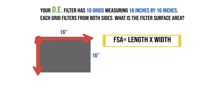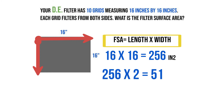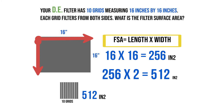Filter surface area is going to be length times width, so it's going to be 16 times 16, which gives us 256 square inches. But that's just one side — there are two sides to this grid. So we multiply 256 by 2 to get both sides, which gives us 512 square inches per grid.